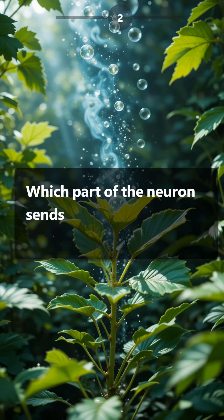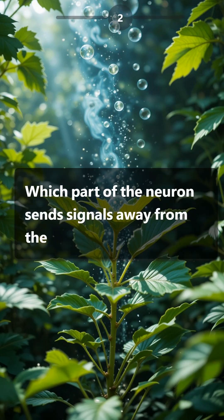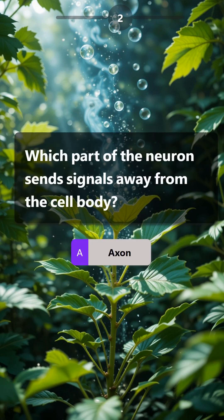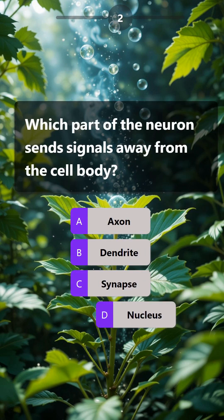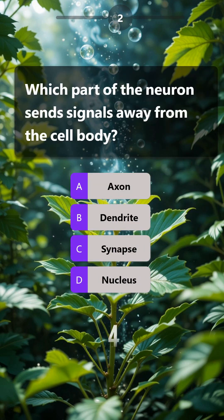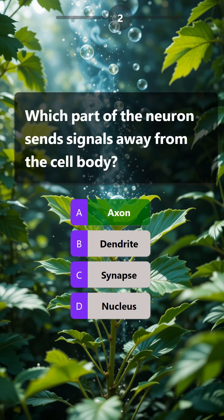Which part of the neuron sends signals away from the cell body? Axon, dendrite, synapse, nucleus. Answer is: axon.